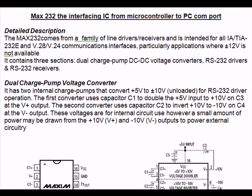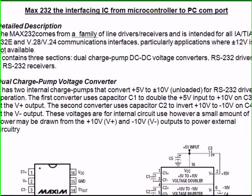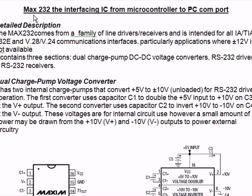Hello. We will now see the IC MAX232, which is the interfacing IC from microcontroller to PC COM port — that is, communication port — normally via a DB9 connector, and we call that PC COM port COM 1.